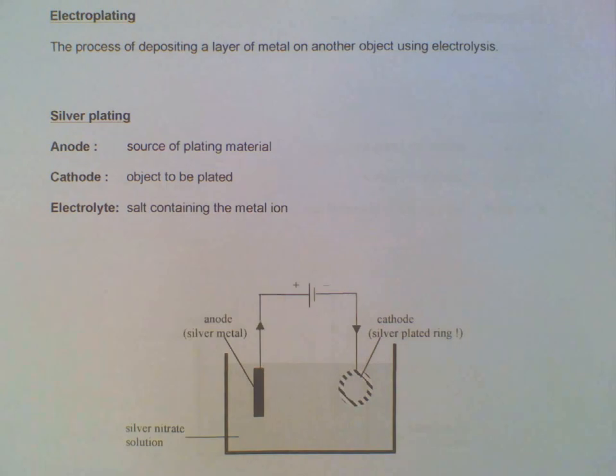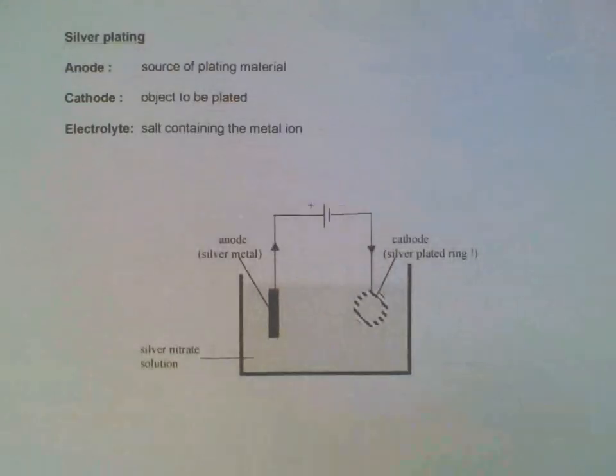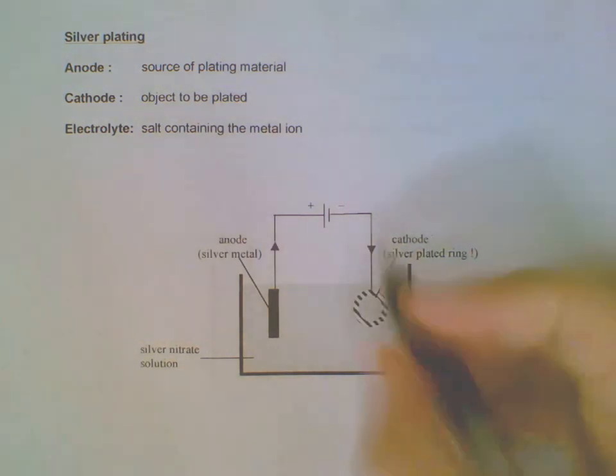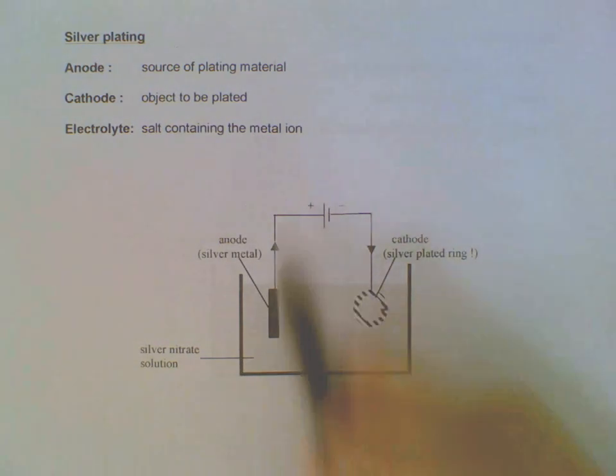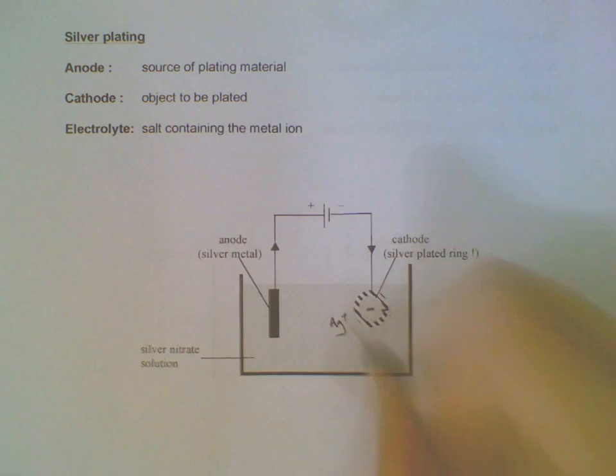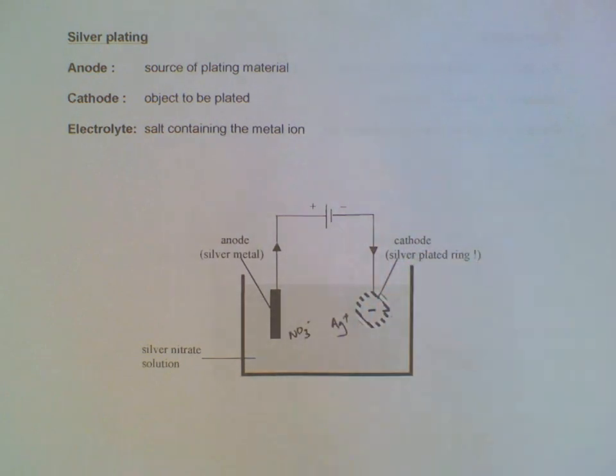So we have this setup with battery terminals negative and positive. The negative terminal will be where, for example, if you want to have the ring coated, the ring will be connected to the negative terminal. The positive terminal, the cathode, will be where the supply of metal comes from. Now we have silver nitrate solution.